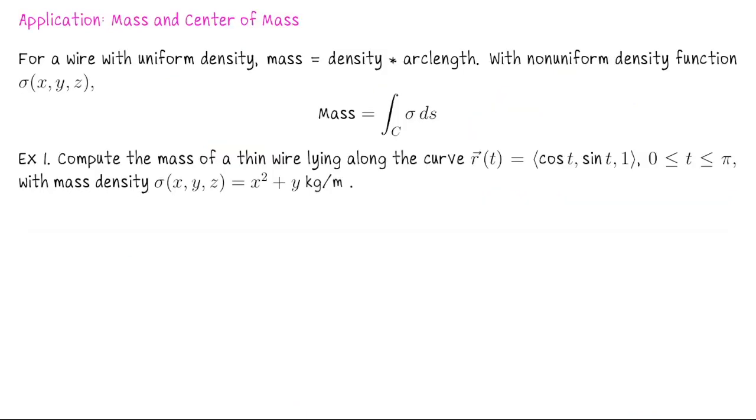We've already seen one application of scalar line integrals and that was to compute curtain area. Another one is to compute mass of a wire. In the past we said that if you're looking at the mass of a plane lamina the idea is density times area. The mass of some three-dimensional object in XYZ space was density times volume. For a wire the idea is density times arc length. So that leads to the integral of the density function with respect to arc length over C where C is a curve representing the wire.